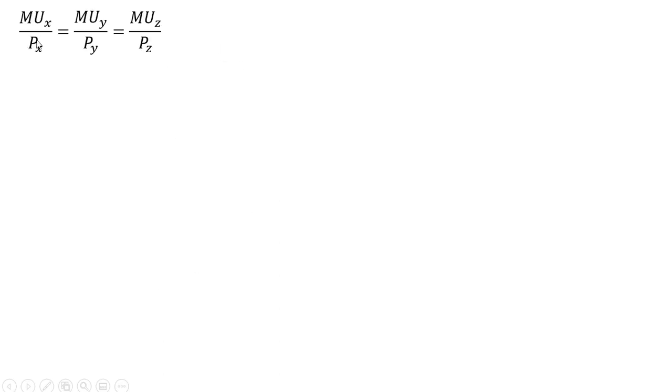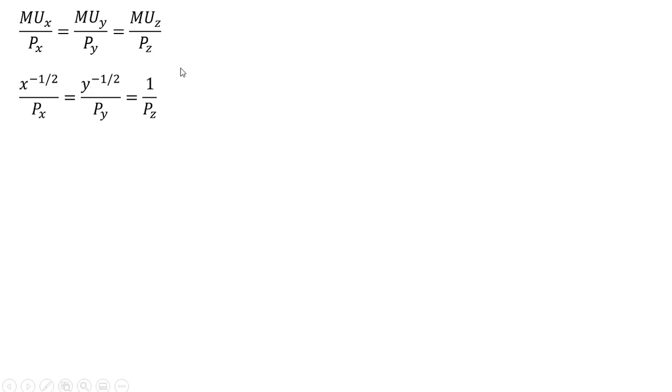We're going to set up our utility-maximizing condition where the marginal utility per dollar is equal across all three goods, making our substitutions in for the marginal utilities.